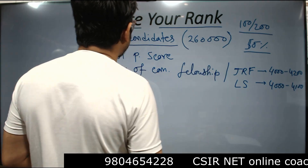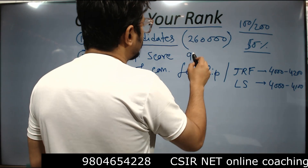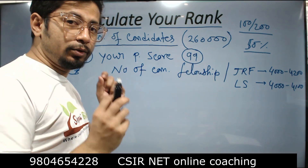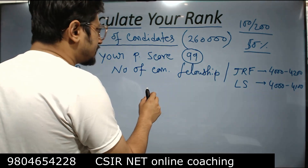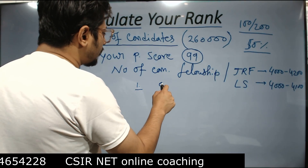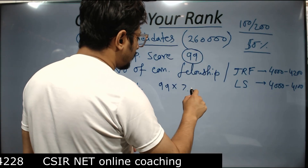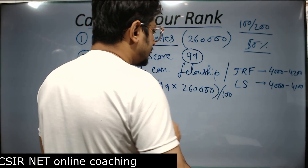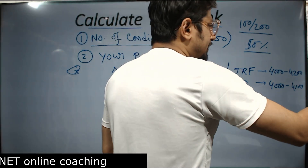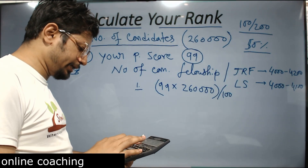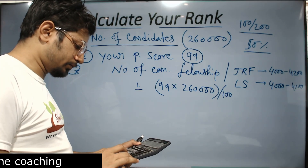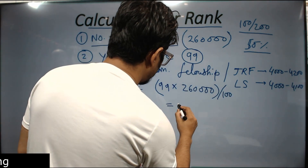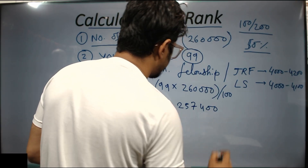Let's imagine that among those 260,000 applicants, you got a percentile of 99. There is a simple formula to convert your percentile into your tentative rank. Step one: multiply your percentile by the total number of candidates applied, then divide by 100. So: 99 × 260,000 ÷ 100 = 257,400.